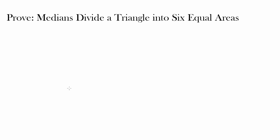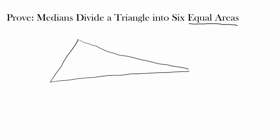Let's prove that medians divide a triangle into six triangles with equal areas. At first this may seem unintuitive, so let's start by drawing some medians and see what happens. Medians are the segments connecting a vertex to the midpoint of the opposite side. Let's draw one median, then another, and then another.